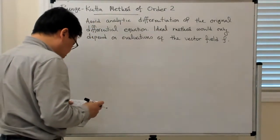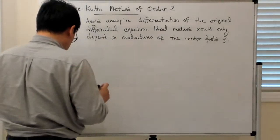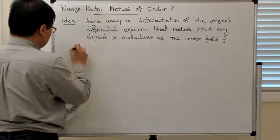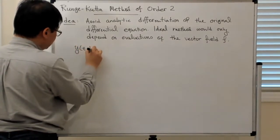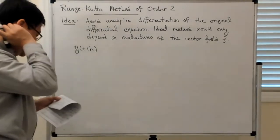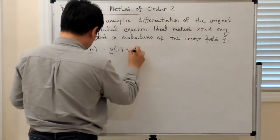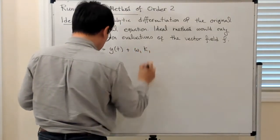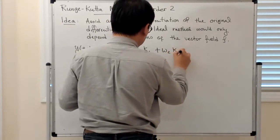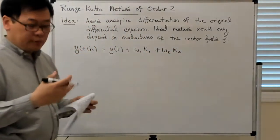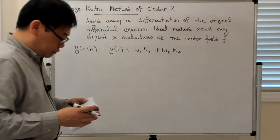So let's see how you go about doing that. The whole point of this Runge-Kutta approach is to achieve a more accurate approximation of the numerical solution of the differential equation, constructed from evaluating the vector field at more than one point. We write y(t+h) = y(t) + h(w1·k1 + w2·k2), where k1 and k2 are evaluations of the vector field.